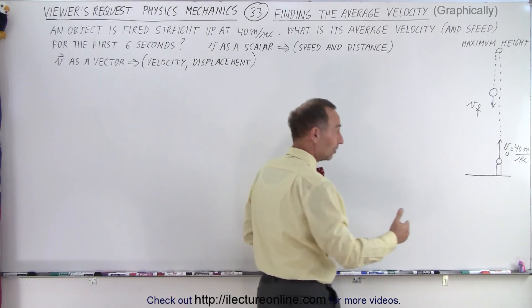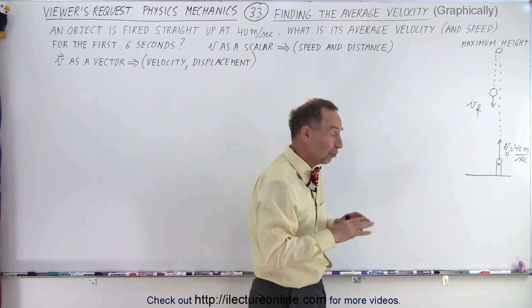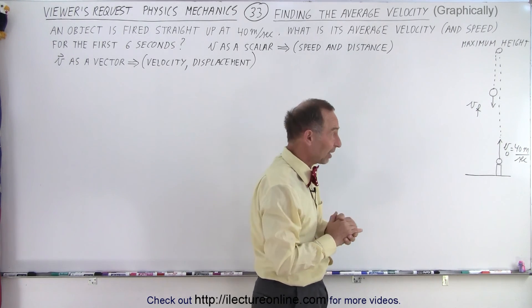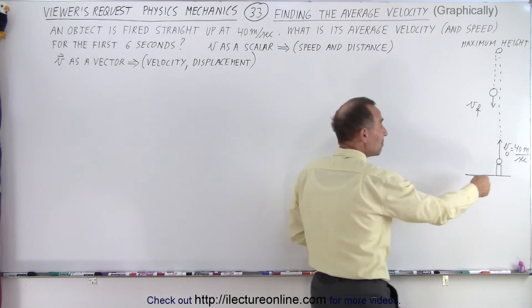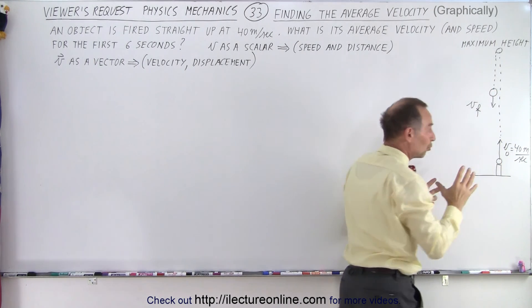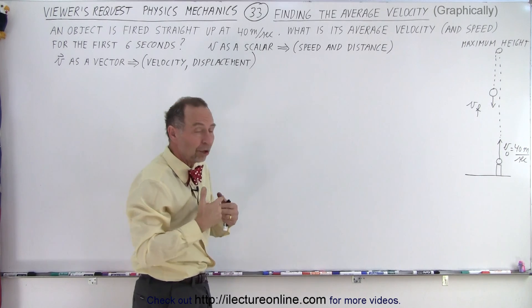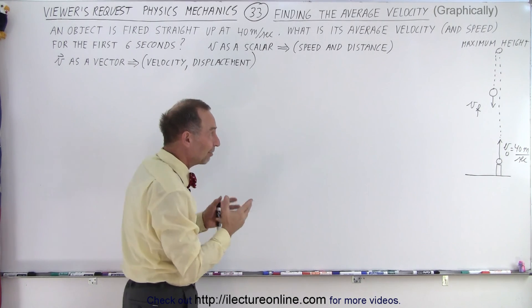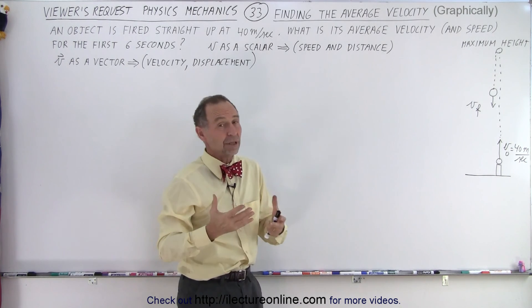And they want to know what the average velocity is over the first 6 seconds. Since the initial velocity is only 40 meters per second and the acceleration due to gravity is almost a negative 10 meters per second squared, we realize that the object will reach maximum height and start coming back down. Part of the difficulty is understanding whether they want us to calculate based on the vectorial perspective or the scalar perspective.